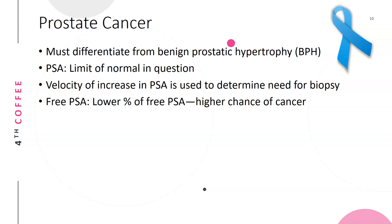Prostate cancer: you must differentiate prostate cancer from benign prostatic hypertrophy (BPH). For PSA, the upper limit of normal has been in question — it is four nanograms per milliliter. The velocity of increase in PSA is what is used to determine the need for biopsy. If a man has an elevated level, it's drawn again a few weeks or months later. If levels stay elevated but are not increasing, it's probably BPH. But if every retest shows a higher value, then you're looking at prostate cancer. A lower percentage of free PSA indicates a higher chance of cancer.